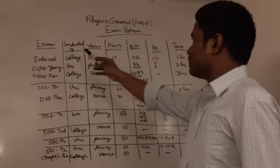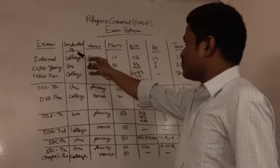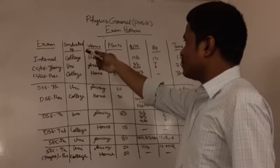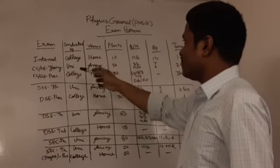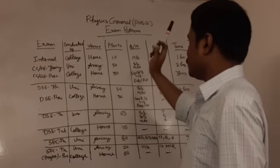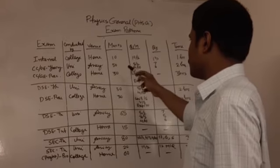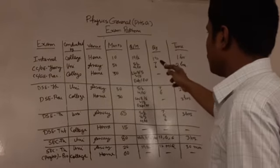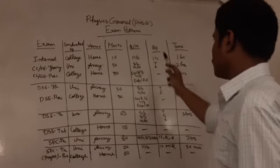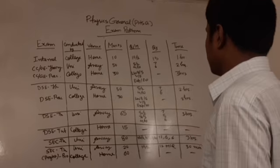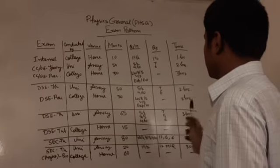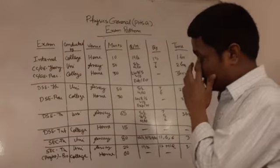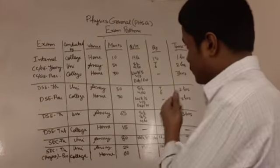The categories include: conducted by, the venue, the marks of the exam, the questions and marks per question, the total number of questions, and the time allotted in each exam.